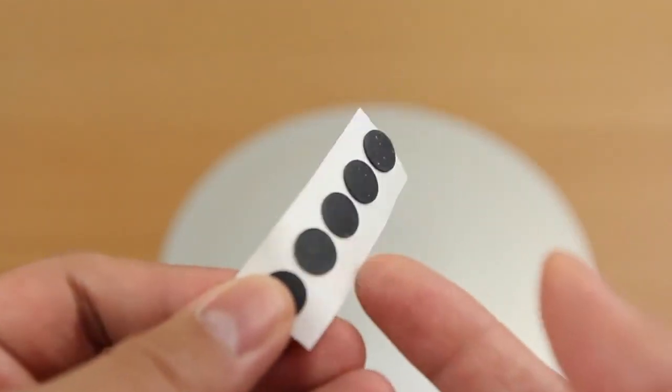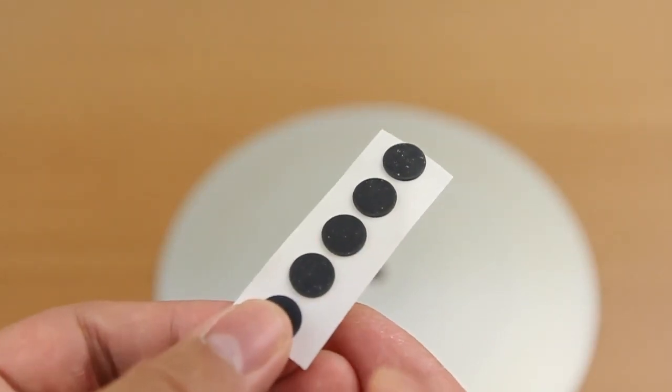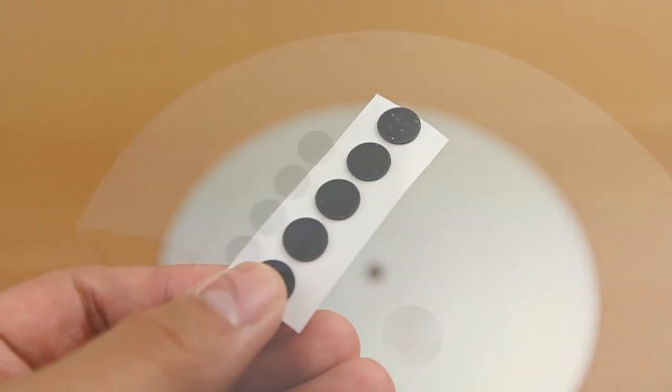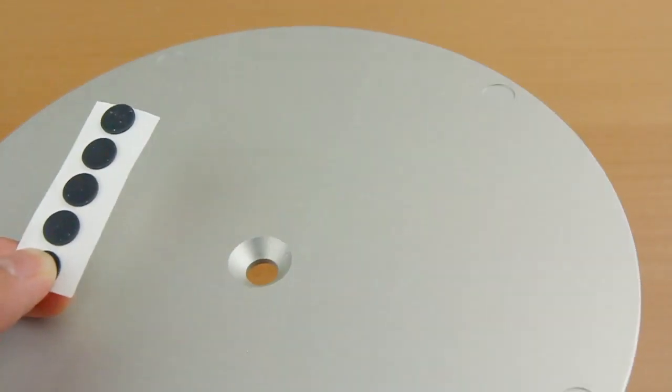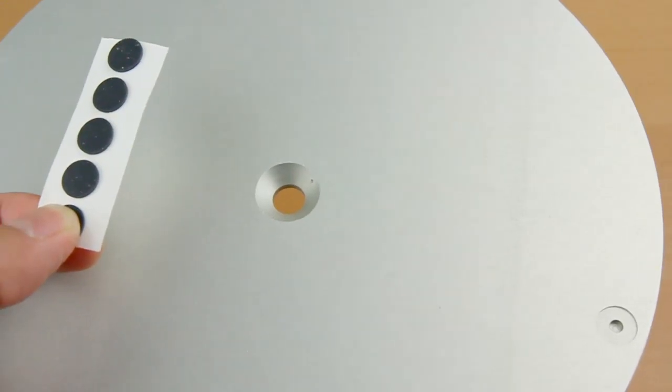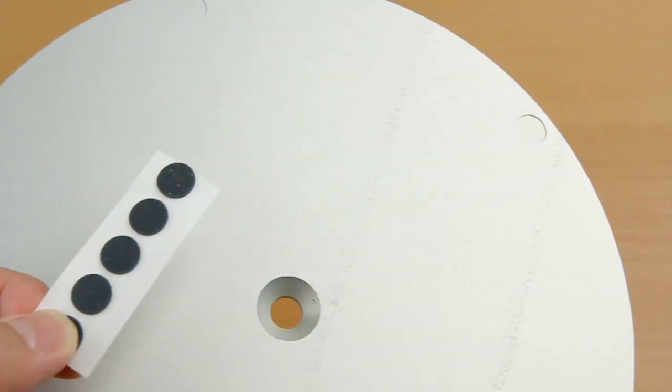They do give you these felt stickies. You're going to want to put this on the bottom of your iPad stand so it doesn't move or slide about. What's great is they've got these little grooves pre-drilled on the back so you won't have to do anything to figure out the alignment.